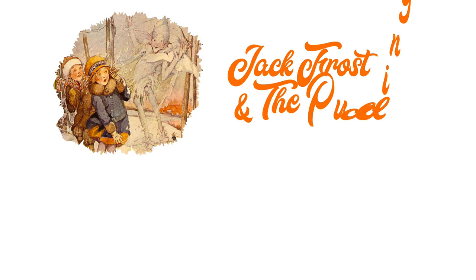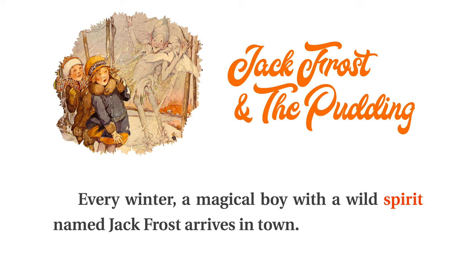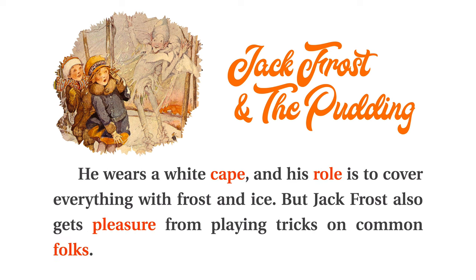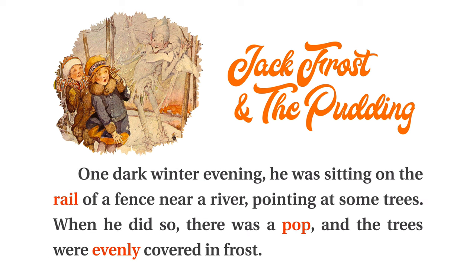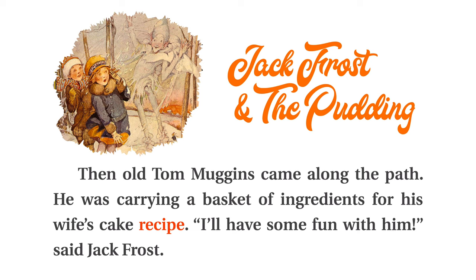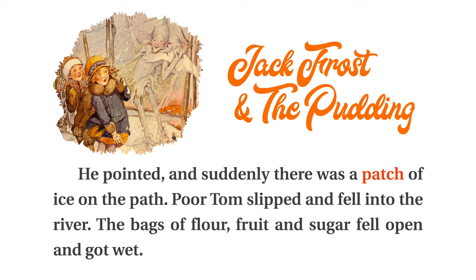Jack Frost and the Pudding. Every winter, a magical boy with a wild spirit named Jack Frost arrives in town. He wears a white cape, and his role is to cover everything with frost and ice. But Jack Frost also gets pleasure from playing tricks on common folks. One dark winter evening, he was sitting on the rail of a fence near a river, pointing at some trees. When he did so, there was a pop, and the trees were evenly covered in frost. Then old Tom Muggins came along the path. He was carrying a basket of ingredients for his wife's cake recipe.